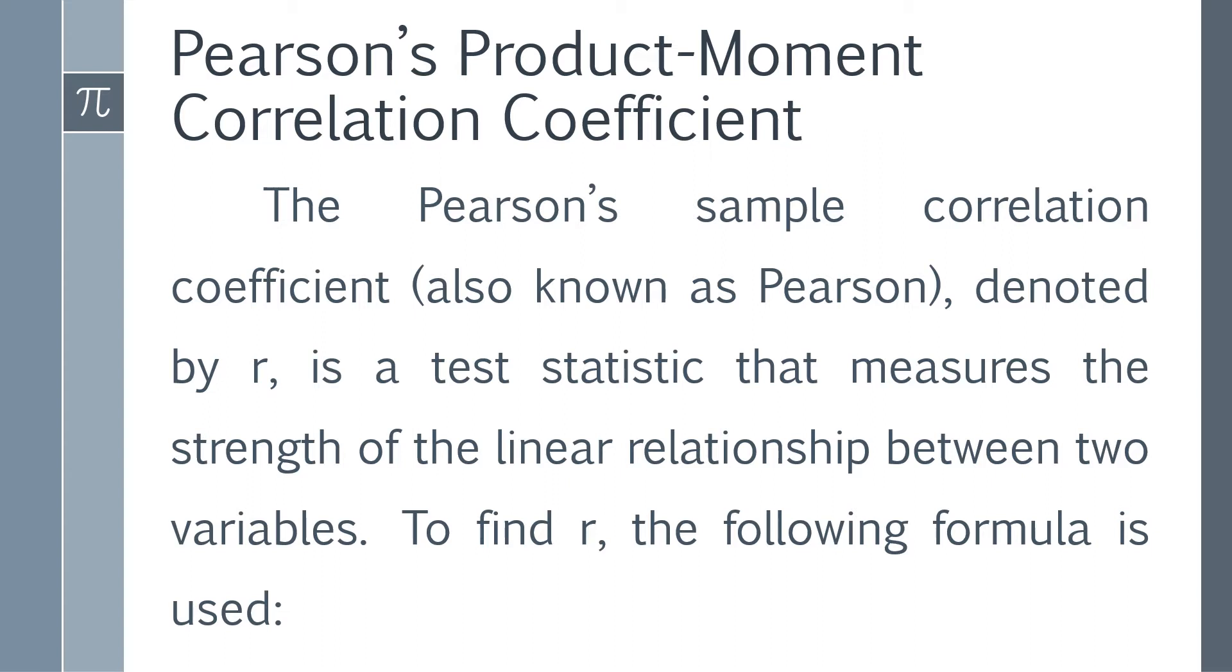is a test statistic that measures the strength of the linear relationship. Take note of this linear relationship between two variables because sometimes the relationship must be not linear. They have the relationship but not linear. To find r, the following formula is used.